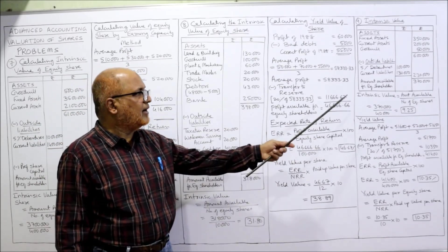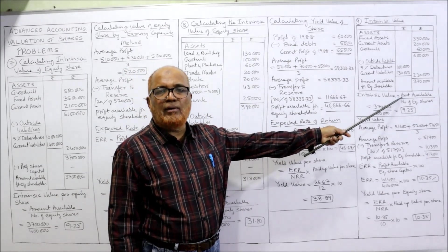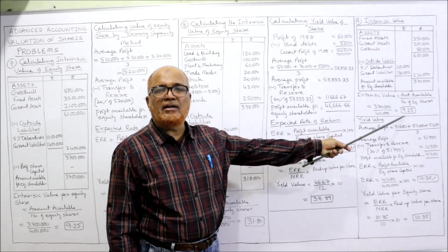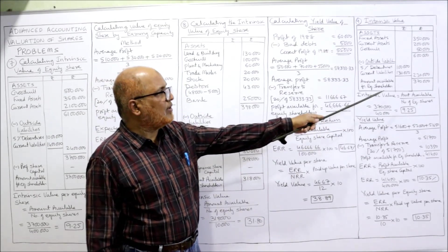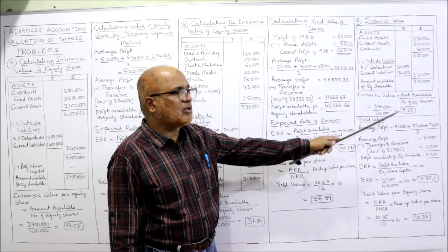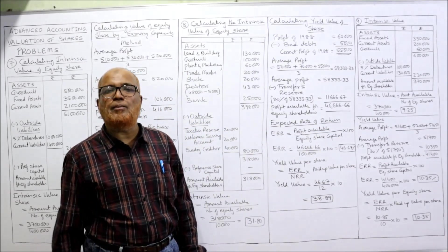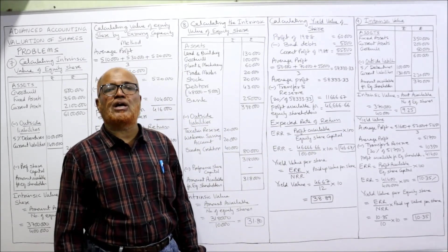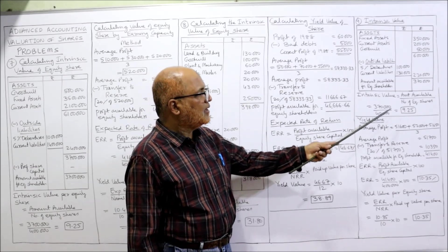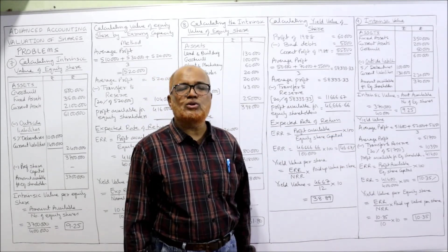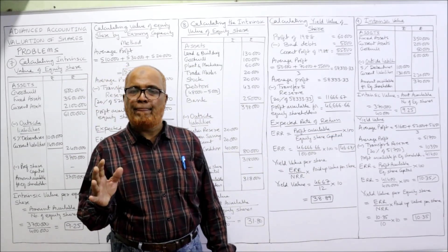So 3 lakh 70,000 is the amount available for equity shareholders. Intrinsic value = amount available ÷ number of equity shares = 3,70,000 ÷ 40,000 = 9.25. This is the intrinsic value.